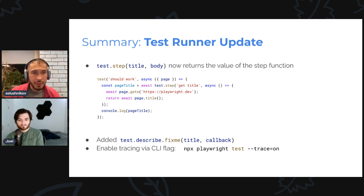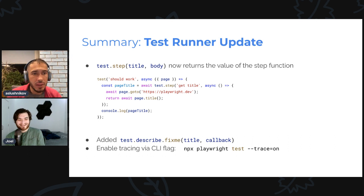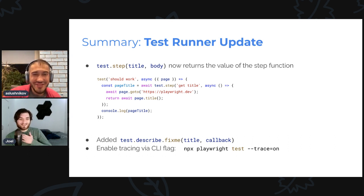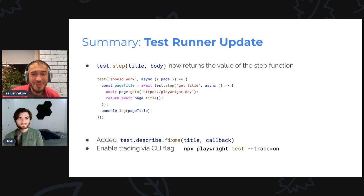What does `--trace=on` do? It just sets tracing to on for the test run. The trace goes to `test-results` as usual. Not everybody uses tracing but it's very useful when your tests fail — not everyone's tests always pass on the first try.